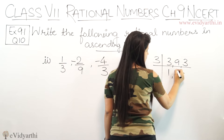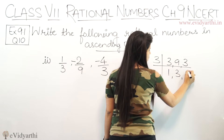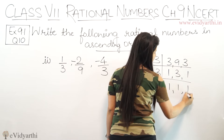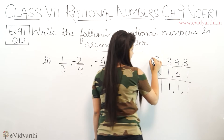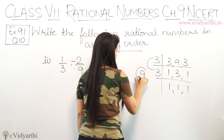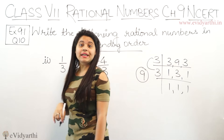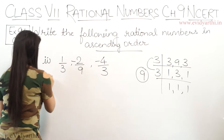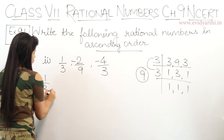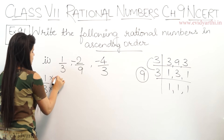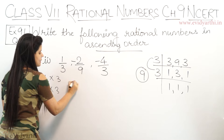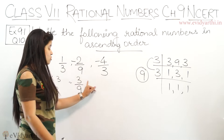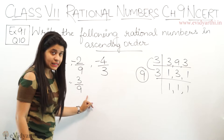3 से करेंगे: 1, 3, 1. Again 3 से करेंगे: 1, 1, and 1. So 3 × 3s are 9. Means कि हमें इनका denominator 9 करना है. So सबसे पहले 1 upon 3 — into 3, into 3 — this will be 3 upon 9. 1s are 3 and 3×3s are 9. So यह हो जाएगा 3 upon 9.